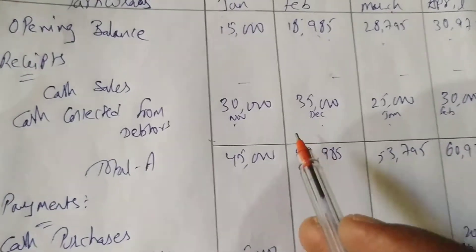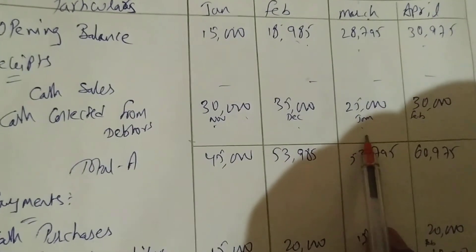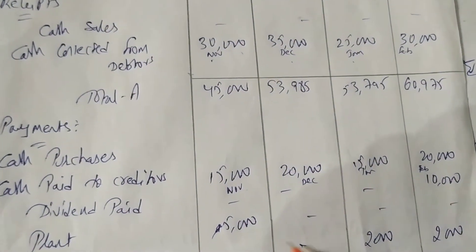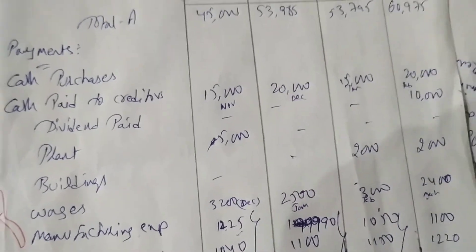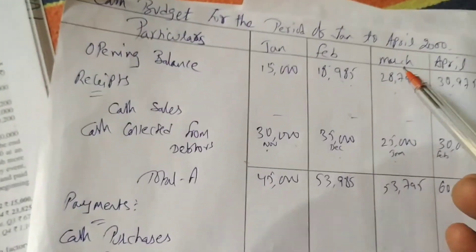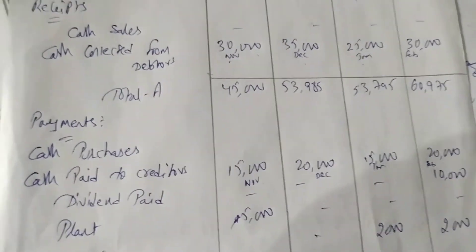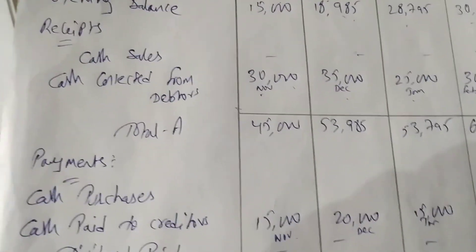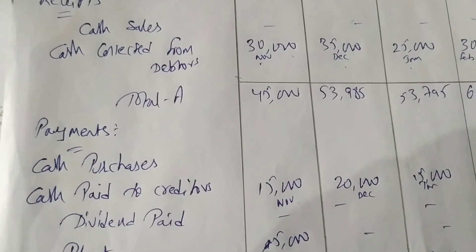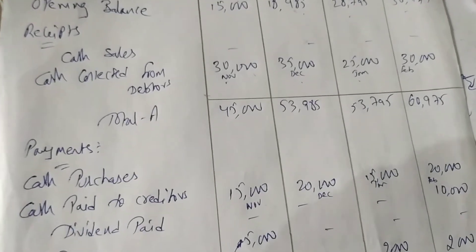To summarize: two months before January is November; two months before February is December; two months before March is January; two months before April is February. Purchases and sales use two-month lag; wages and other expenses use one-month lag. Each closing balance goes to the next month's opening balance. Cash budget is very easy — practice three to four problems of cash budget and two to three problems on flexibility, and two questions will definitely come in the exam. Thank you.